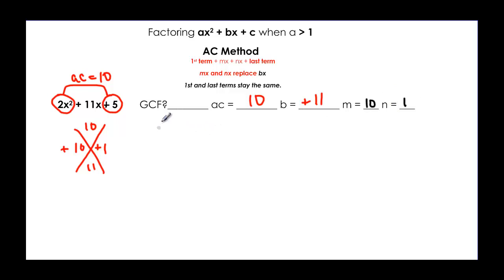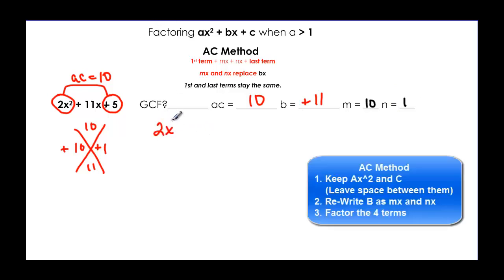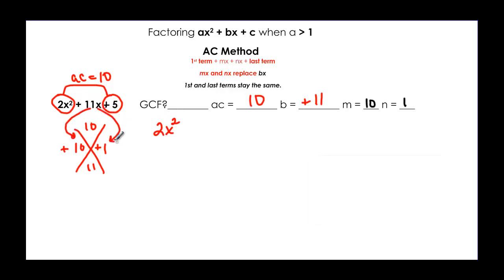So here's the AC method: we take our 2x squared and keep it. But remember we're going to rewrite 11x with these two factors because it's just another way of writing 11x. It just takes two terms to do it so we will say plus 10x and then plus 1x. So we take that m and n and we multiply it by x to get our middle terms and then we add the last term back on at the end.